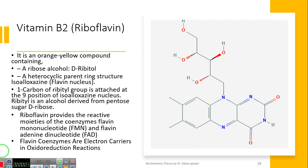So the second vitamin in vitamin B complex is riboflavin. Riboflavin is an orange-yellow compound which contains a ribose alcohol. Ribose alcohol is basically this portion in the structure is ribose alcohol. It is converted into, it is also called as D-ribitol. And second structure is a heterocyclic parent ring structure, which is iso-alloxazine or flavin nucleus. This is the flavin nucleus.